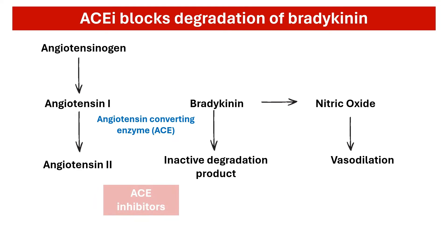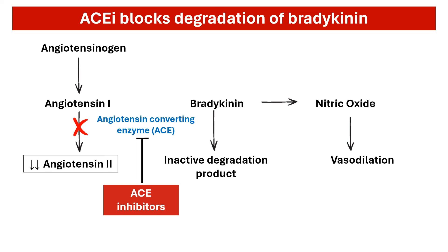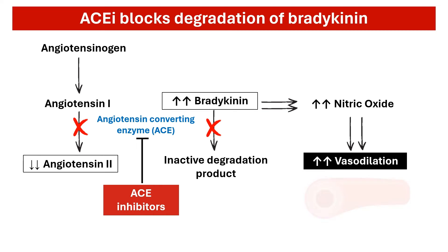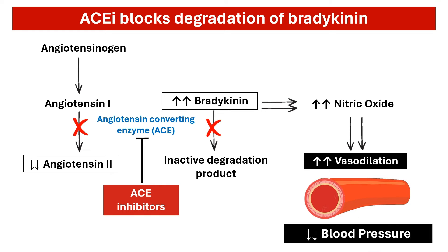Aside from preventing production of angiotensin 2, ACE inhibitors also inhibit the degradation of bradykinin. Increased bradykinin stimulates local release of nitric oxide, a potent vasodilator. In short, ACE inhibitors cause blood vessels to dilate. These combined actions result in a reduction of systemic vascular resistance and blood pressure, making ACE inhibitors a powerful antihypertensive medication.